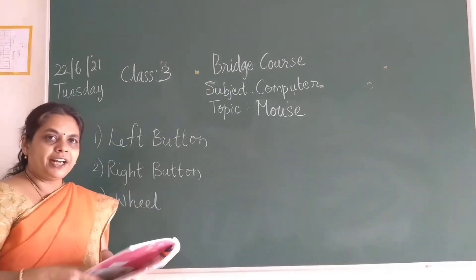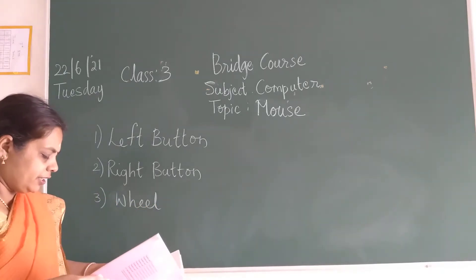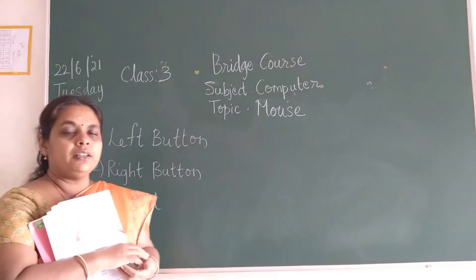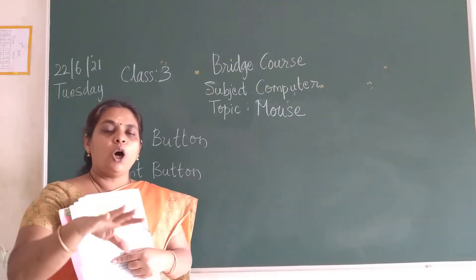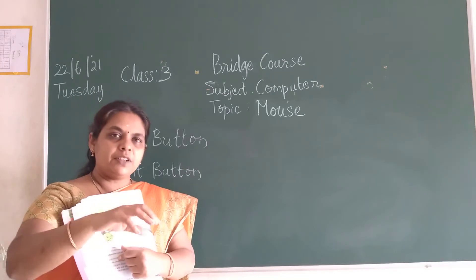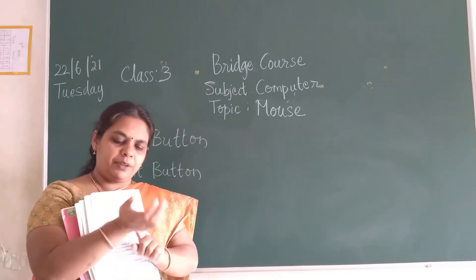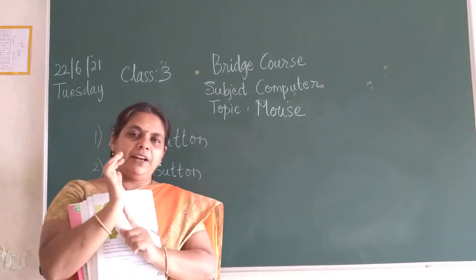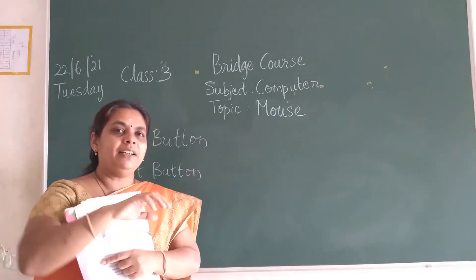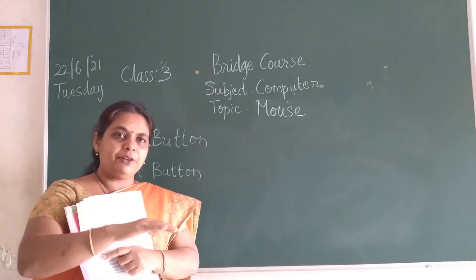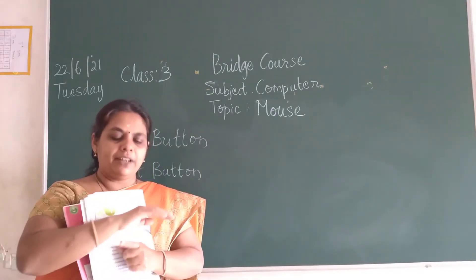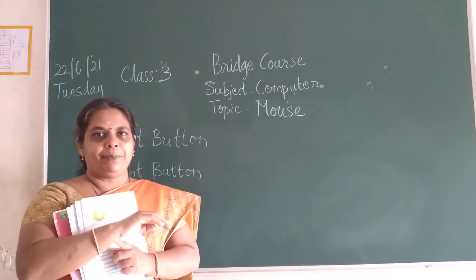So the three buttons are: left button, right button, and the scroll wheel children. We have also learned how to hold the mouse, because if we are using it continuously, sometimes our hand will pain. To overcome that, we have to keep it at a level so that our hand doesn't get pain.